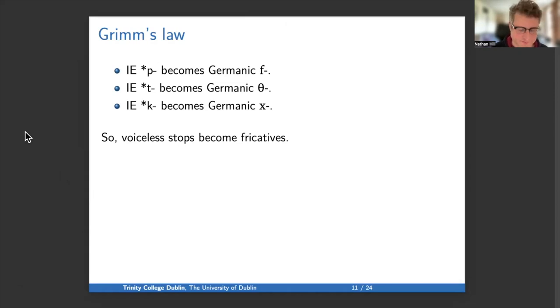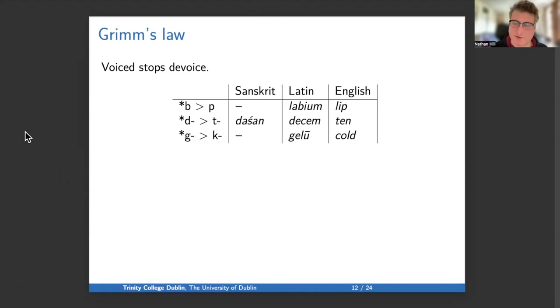Now I move a bit faster, only give one example for each specific change, and then move to these more general switches of manner of articulation. So we had stops becoming fricative, now we have voiced stops becoming devoiced. So B becomes P. For instance, Latin labium becomes English lip. D becomes T. So Sanskrit dashan, Latin decem, we get English ten. G becomes K. Latin gelu gives us English cold. So those examples show that voiced stops become devoiced.